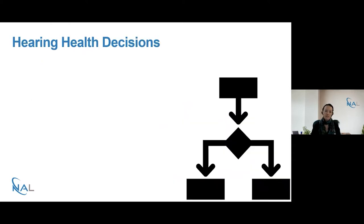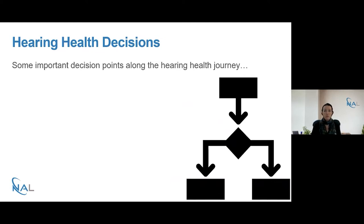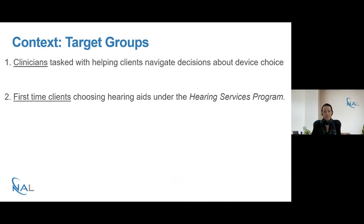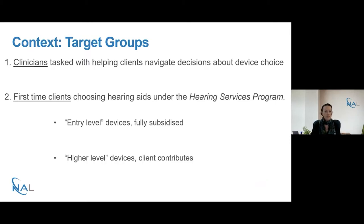Where can BI be used for hearing health decisions? We know people say that hearing is important to them, but this doesn't always translate into action. More people need help than make the decision to seek it, and more people would benefit from hearing aids than choose to get fitted. Many people are choosing hearing aids that may not be the best for their needs. We're working with clinicians in Australia having conversations with first-time clients with aidable loss seeking help under the Hearing Services Program. Clients can choose between an entry-level basic device, which is fully subsidised, or contribute their own money towards a higher-level device, which is partially subsidised.